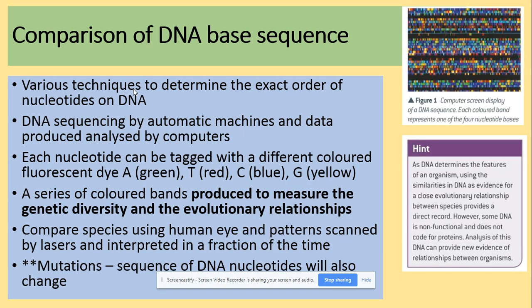It is better to compare DNA base sequences because we have many techniques that can determine the exact order of nucleotides on DNA. DNA sequencing is done by automated machines and data is produced straight into a computer. Different colors code for specific DNA bases, and the series of colored bands produced is used to measure genetic diversity and evolutionary relationships between species.